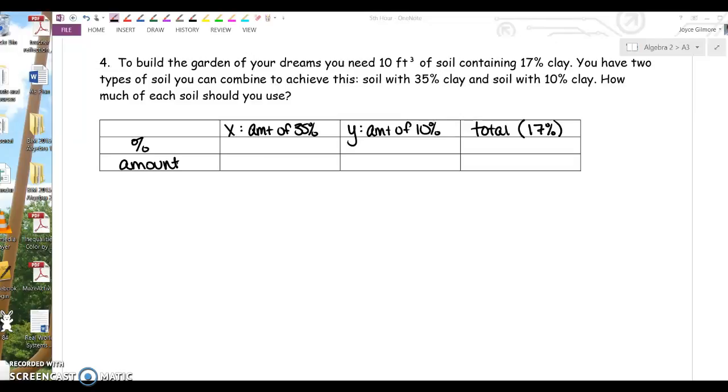The amount is the easy row. How much of the 35% soil do we need? We don't know. That's X. How much of the 10% soil do we need? Y. And that has to add up to how much soil total. 10 cubic feet. The amount is in cubic feet.